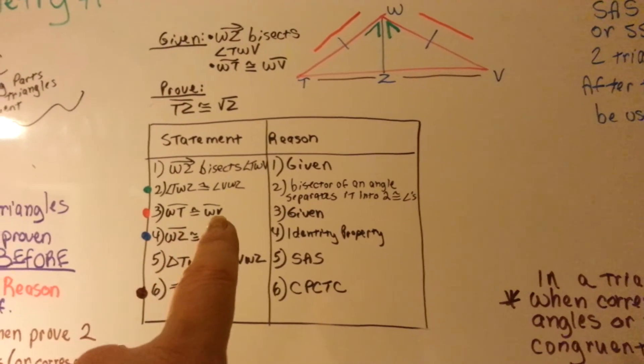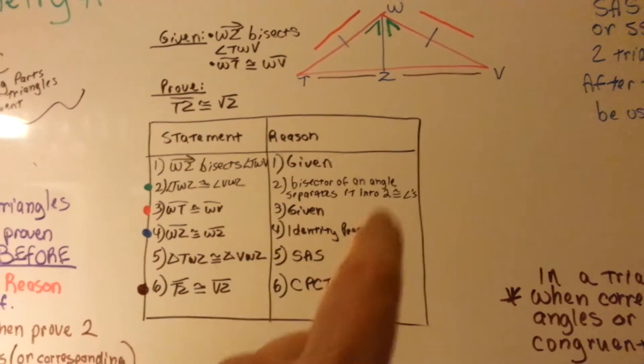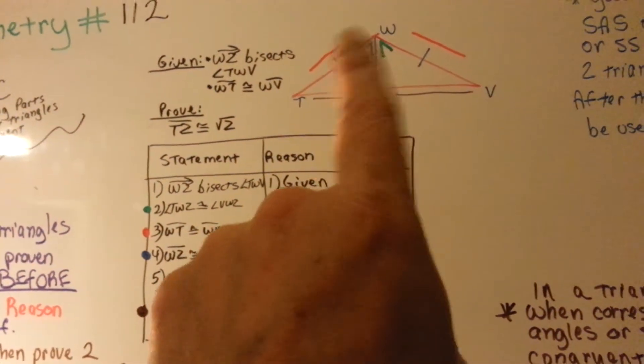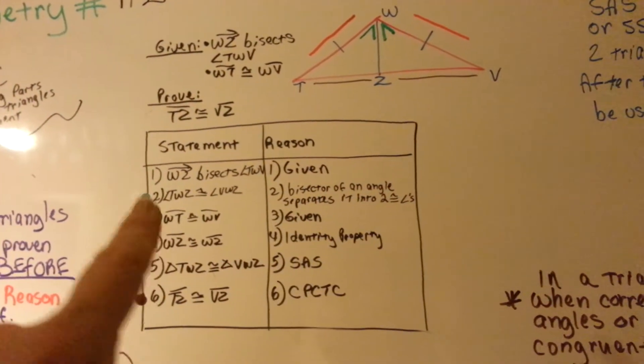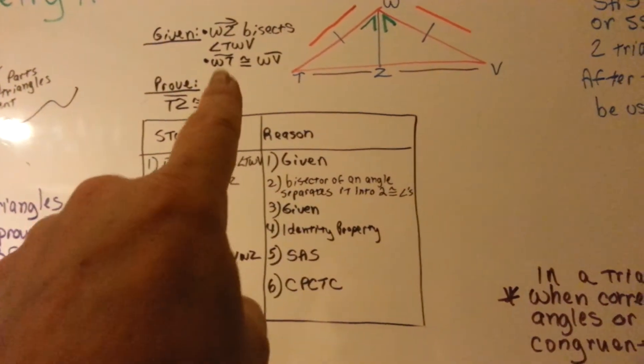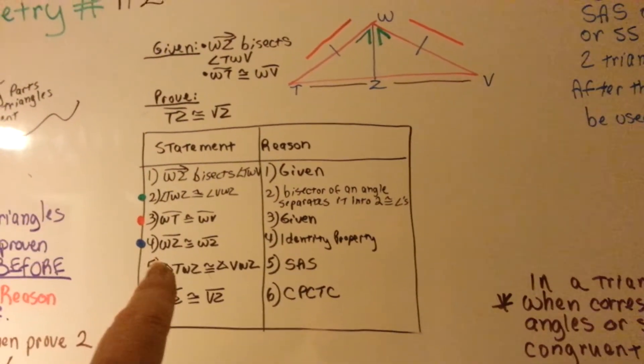WT is congruent to WV. That's the red lines. WT is congruent to WV. See how I've got them color coded here? That's given. Right there.